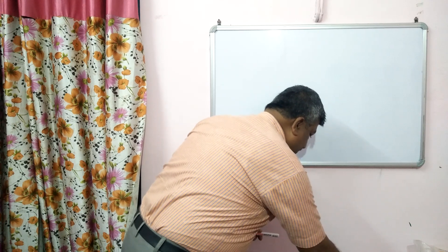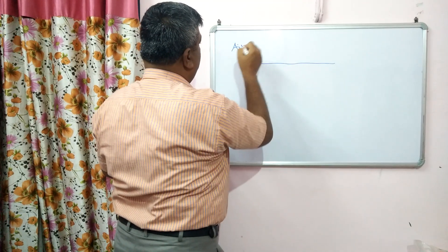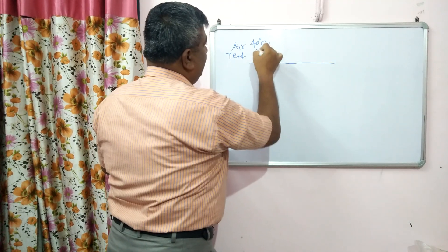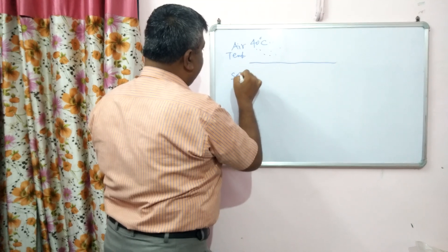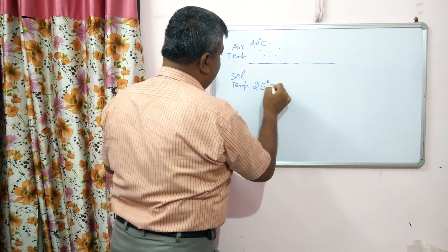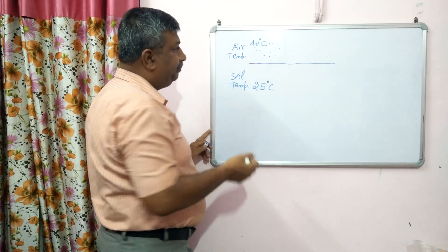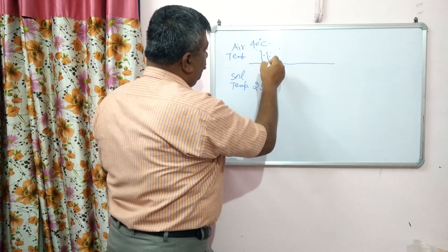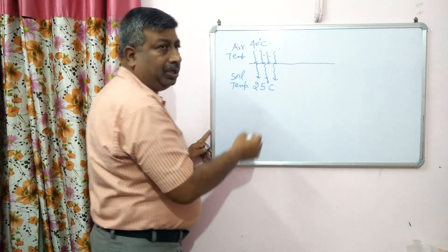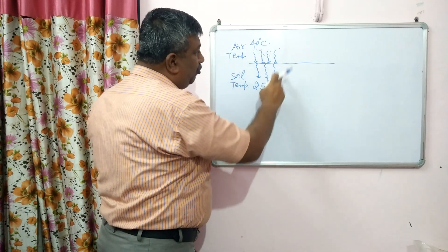Suppose this is the soil and air temperature is 40 degrees centigrade. Soil temperature is suppose 25, 20, or 30 degrees centigrade. Temperature is low in the soil and high in the air. Then heat strikes on the soil surface and transmits into the lower depth, so there is a heat transfer from air into soil.